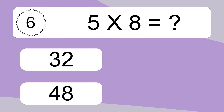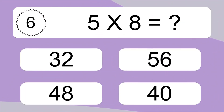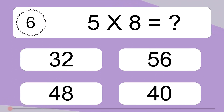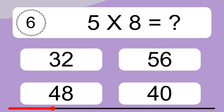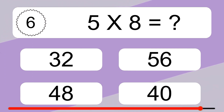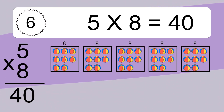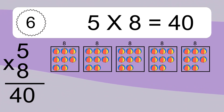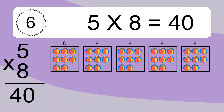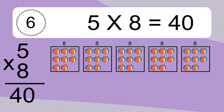5 times 8 equals what? We have 5 boxes, and each box has 8 colorful balls inside. If you count all the balls in all the boxes together, you will have 5 times 8 balls. This equals 40 balls.